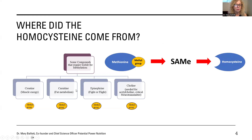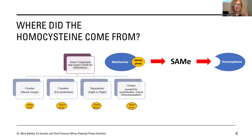Where did that methyl group go? That methyl group — a carbon with some hydrogens on it — is needed to make creatine, which is important for creatine kinase for muscle energy. It's also important to make carnitine — fat needs carnitine to drive into your mitochondria. When we're under stress in fight-or-flight, we make epinephrine, which has a methyl group on it. So if I'm stressed out, I'm going to have elevated homocysteine. If I'm burning more fat from exercise, or if my muscles are using creatine during high-impact aerobics, I'm making more homocysteine.